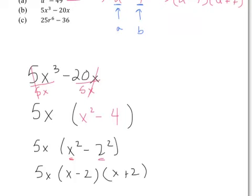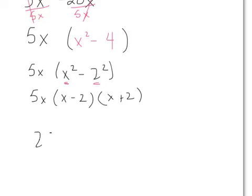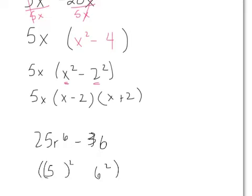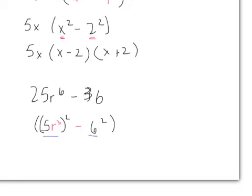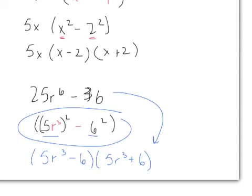Part C: 25r⁶ minus 36. At first it doesn't seem like a difference of two squares, but it is. 36 can be rewritten as 6². For 25r⁶, the 5 comes from squaring 25, and r³ squared gives r⁶ by the power-to-a-power rule. So we have (5r³)² minus 6², where a is 5r³ and b is 6. The answer is (5r³ minus 6)(5r³ plus 6). The intermediate rewriting step is optional if you can spot it directly.